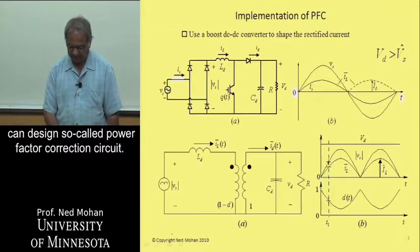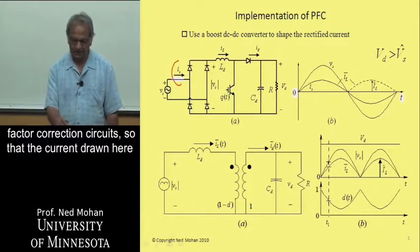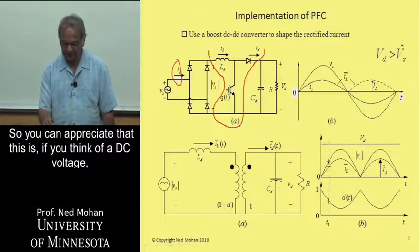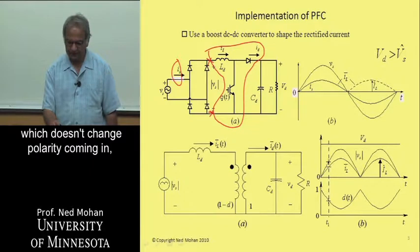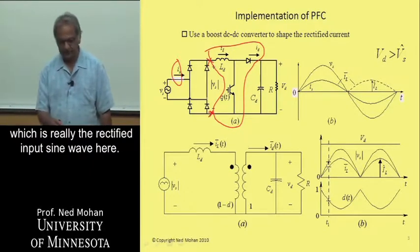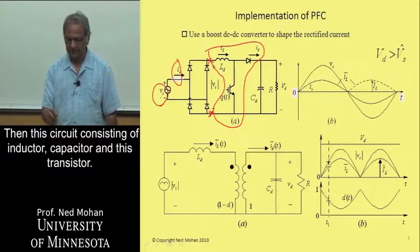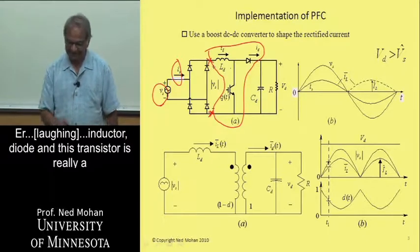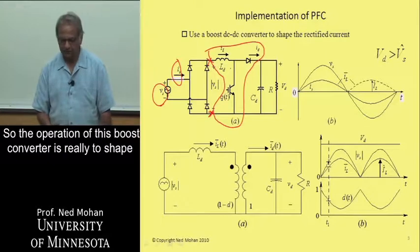Therefore we can design a so-called power factor correction circuit. A very common topology used for these power factor correction circuits — so that the current drawn is basically sinusoidal — is this boost topology over here. If you think of a DC voltage which doesn't change in polarity coming in, which is really the rectified input sine wave, then this circuit consisting of an inductor, capacitor, diode, and transistor is really a boost converter circuit that we have seen earlier.